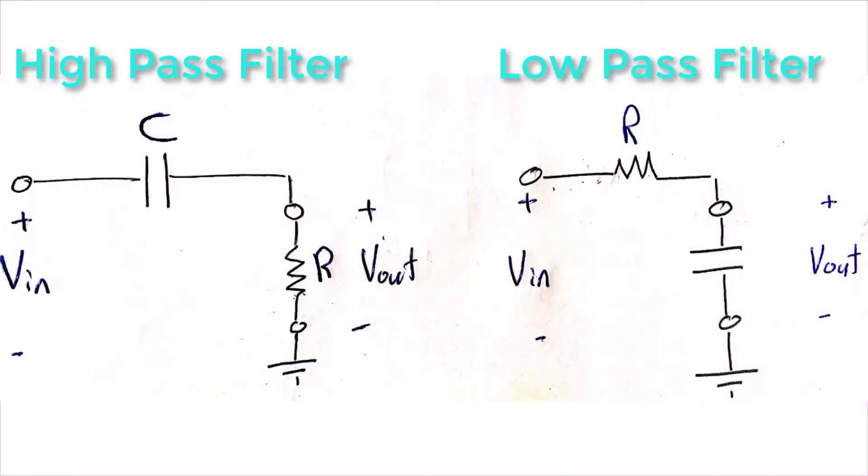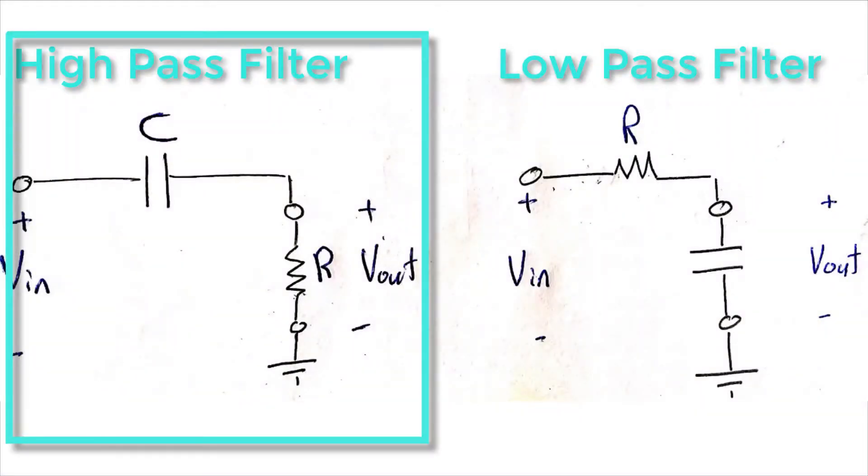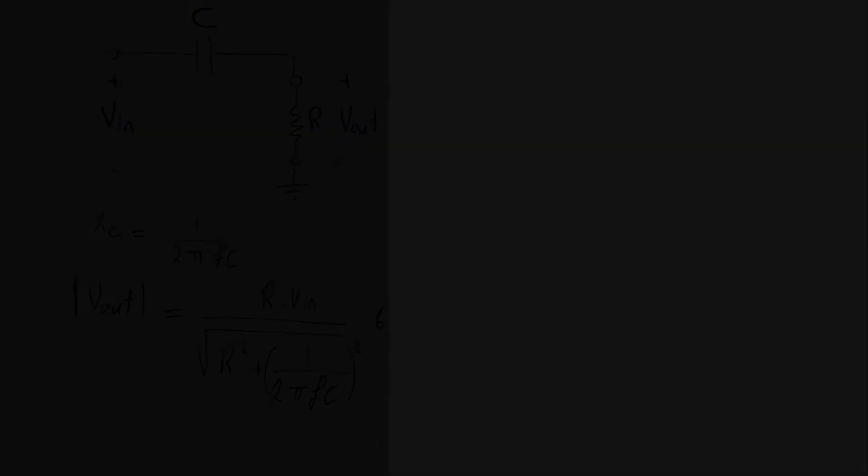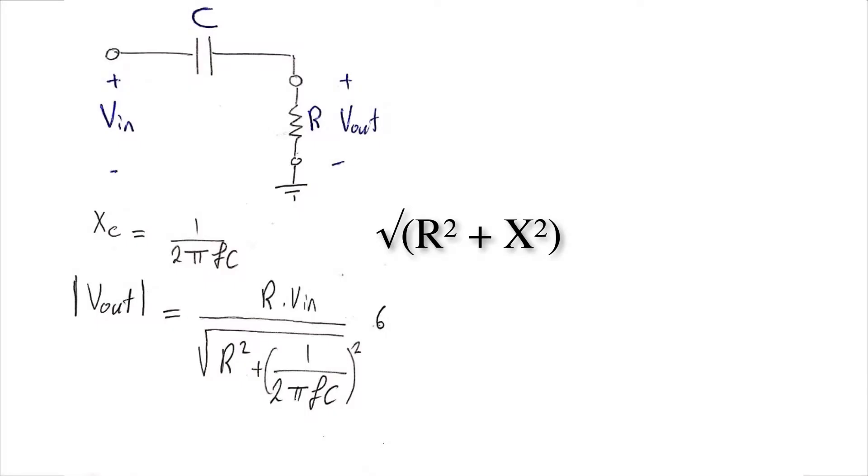Now let's have a look at the working principle of high-pass filters before jumping into its application. All what we need is to find the relationship between the input voltage and the output voltage, and this is possible by applying the voltage division formula. Of course, we need to remember the capacitor reactance and the impedance formulas. And here you go!